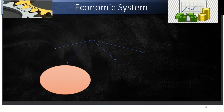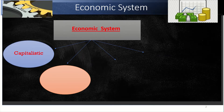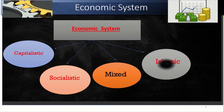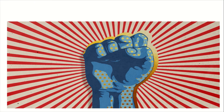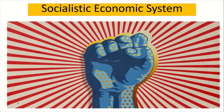We are discussing about the different economic systems. We know that there are four economic systems: capitalistic, socialistic, mixed economic system, and Islamic economic system. In the last class, I discussed about the capitalistic economic system. Today, I will discuss about the socialistic economic system.